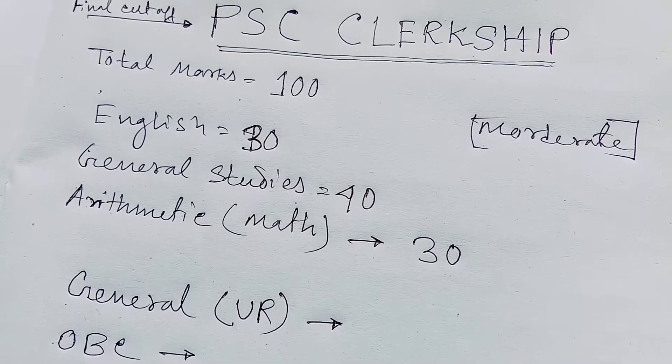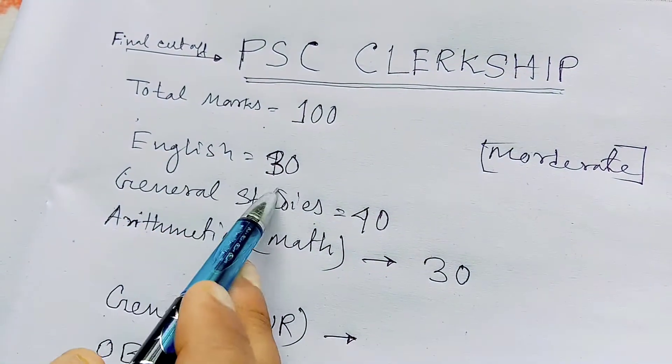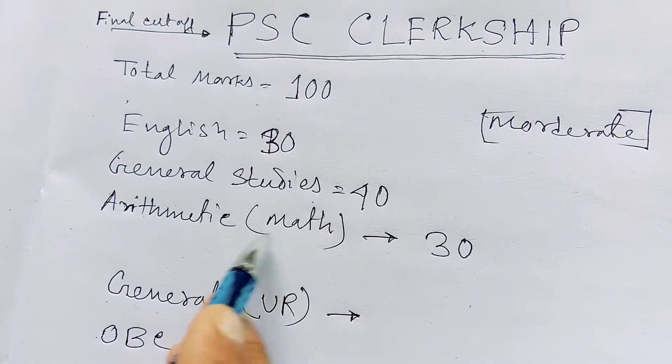Let me talk about the cut-off. The total marks is 100: English is 30, General Studies is 40, and Arithmetic or Math is 30.